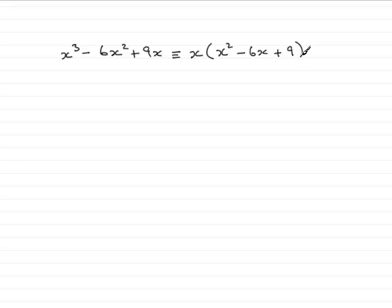Now the question said factorise completely. And when it says completely, it's a hint that it's most probably going to factorise further. And indeed it does. What we've got here is this quadratic factor. And this quadratic factor factorises to two more brackets.